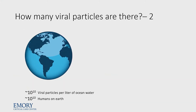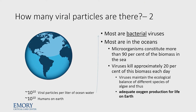How many viral particles are there? There are about 10 to the 10th humans on Earth. Every liter of ocean water contains about that same number of viral particles, and there are about 10 to the 21 liters of water in the ocean — so there are far more viral particles than there are of us. Most are bacterial viruses, most are in the oceans. In the oceans, microorganisms are about 90% of the biomass, and viruses kill about 20% of that each day. They maintain the ecological balance and are responsible for the oxygen we're breathing right now.